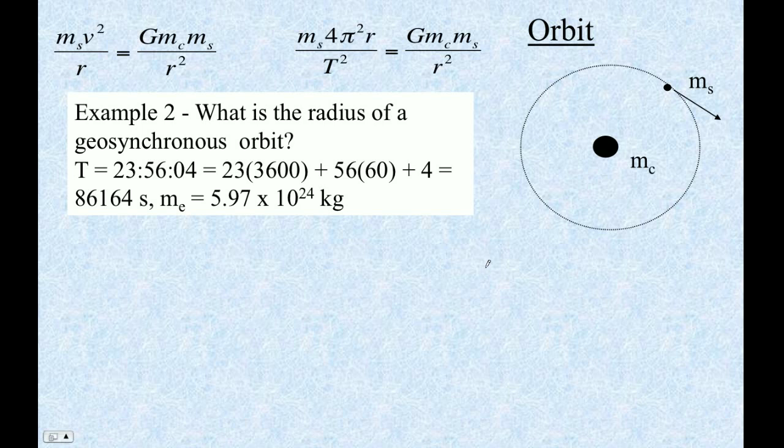So here's the second part of the orbit. Let's calculate the radius of a geosynchronous orbit.